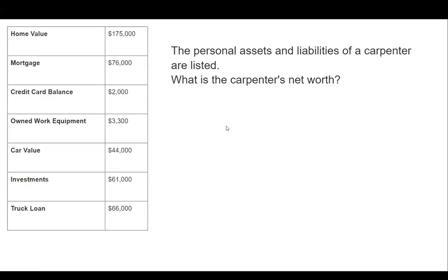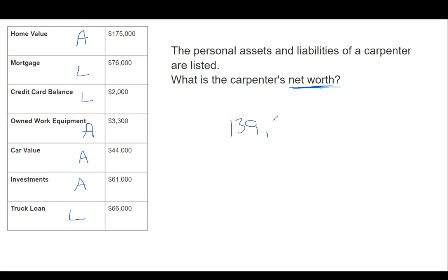The personal assets and liabilities of a carpenter are listed. What is the carpenter's net worth? A home value is an asset, but the mortgage is a liability. A credit card balance is a liability, but owned work equipment is an asset. A car value is an asset. Investments is an asset, and a loan is a liability. Adding assets and subtracting liabilities: 175,000 minus 76,000 minus 2,000 plus 3,300 plus 44,000 plus 61,000 minus 66,000. Net worth is $139,300.